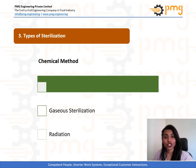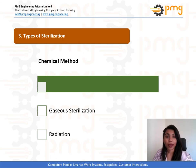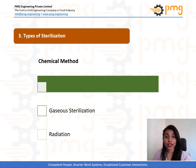Chemical gases can be mutagenic and carcinogenic, hence proper handling is advised. The next method is radiation — electromagnetic radiation such as gamma rays and UV rays, and particulate radiation such as accelerated electrons, are used to target the DNA of microbes. The after-effects of radiation can be undesirable, but it is quite useful for sterilization of industrial heat-sensitive products.